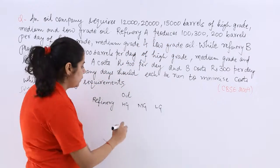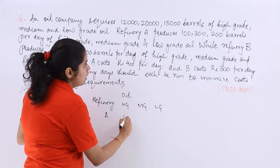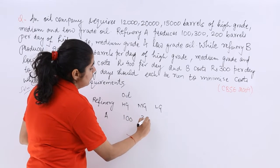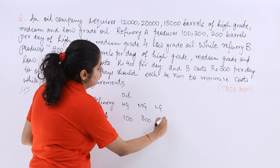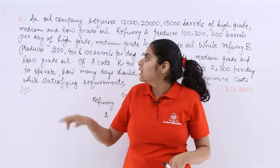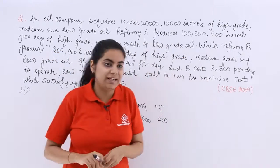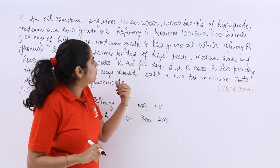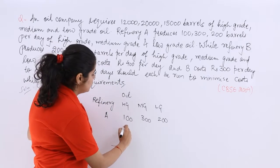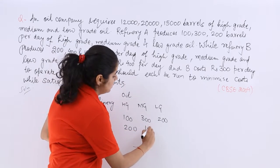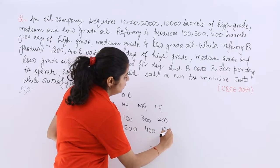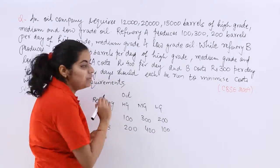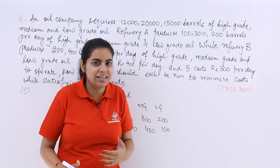Refinery A produces 100 of high grade, 300 of medium grade, 200 of low grade. Let's cross check refinery A per day. Fine. Next is what? We are talking about refinery B. So it is 200, 400 and 100. So this is refinery B. So this information is very clear.